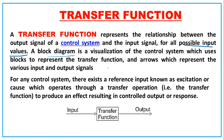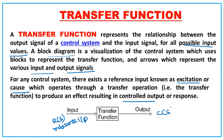The transfer function will be represented by small blocks going from input to output — G(s), H(s) — and arrows represent the various input and output signals. For any control system there exists a reference input known as excitation, which operates through a transfer operator to produce an effect resulting in a controlled output C(s), or response.